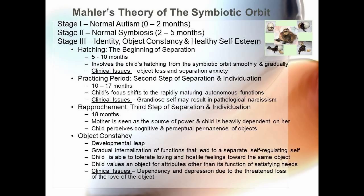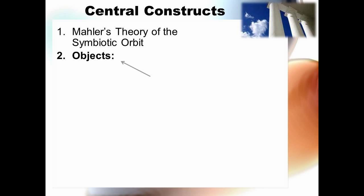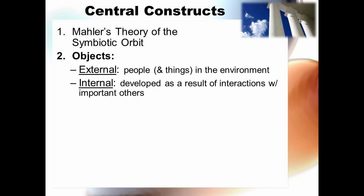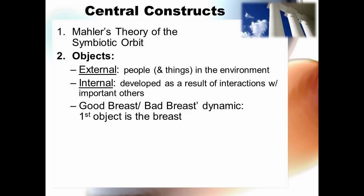The second central construct is objects. We can think of objects as external — people and things in the environment — and internal, meaning they are developed as a result of interactions with important others, such as caregivers. An important dynamic is the good breast and bad breast. Because the breast is essentially the first entity that the child comes in contact with, it is considered the first object. The caretaker, usually the mother, nurtures the infant's attachment, and the personality is formed through interactions with others.